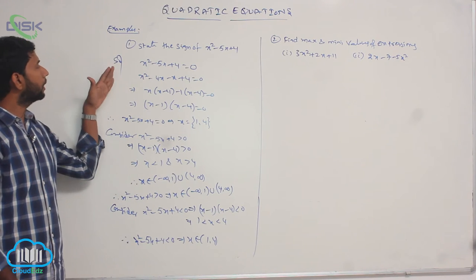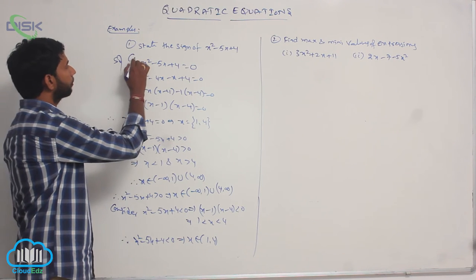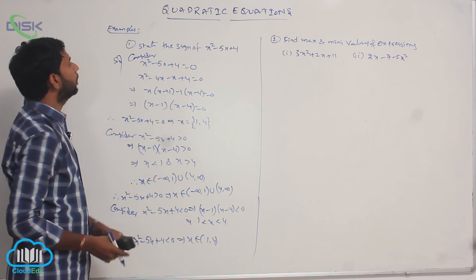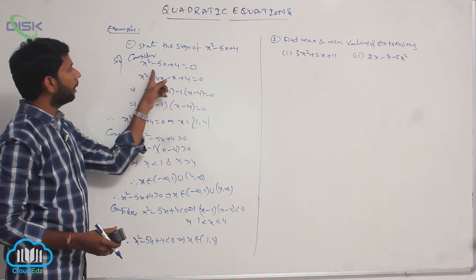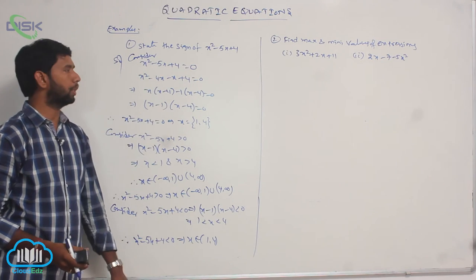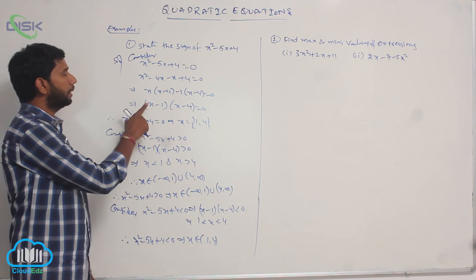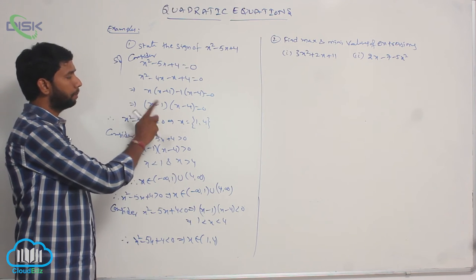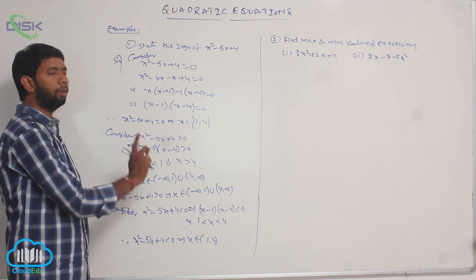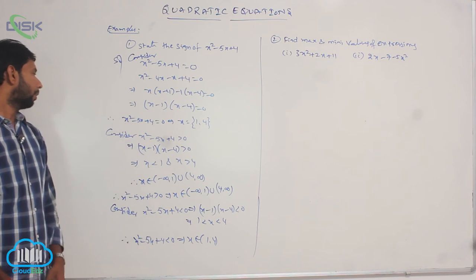The expression is 0 when x² - 5x + 4 = 0. The factors are (x - 1)(x - 4) = 0, so the expression is 0 when x = 1 or x = 4.